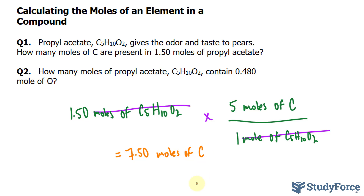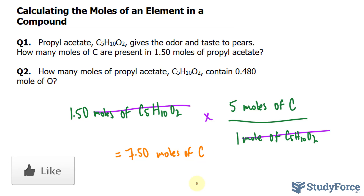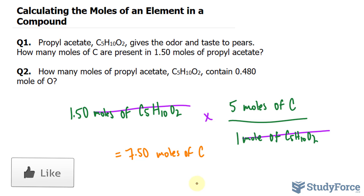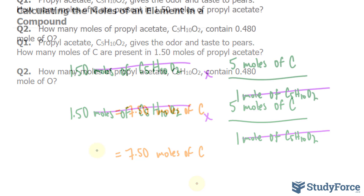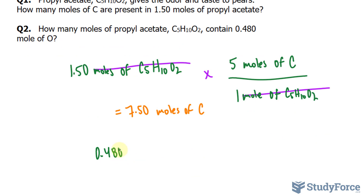That's all it takes. Let's move on to question 2: how many moles of propyl acetate contain 0.48 moles of oxygen? To do this problem, we have to first organize our numbers. We're told we have 0.480 moles of oxygen.